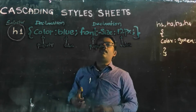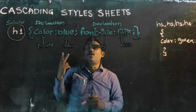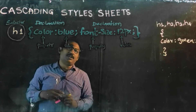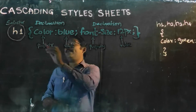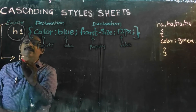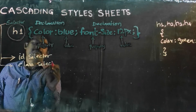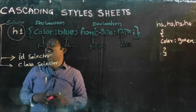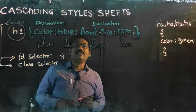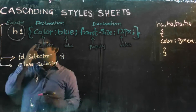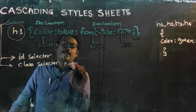Cascading style sheets provides or facilitates us to even give a group selector. Next comes to the different types of selectors. Cascading style sheets selectors are of two types — one is the ID selector and another is the class selector. The ID selector will be given with a hash. That means a selector with a hash, then we can say it is an ID selector.